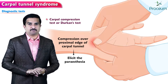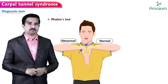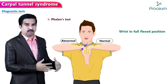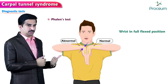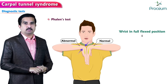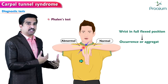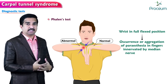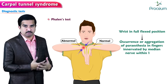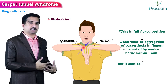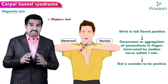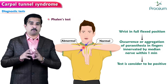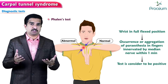In the Phalen's test, the wrist is actively or passively held in full flexion. If occurrence or aggravation of paresthesia in the fingers innervated by the median nerve is perceived within one minute, the test is considered positive.